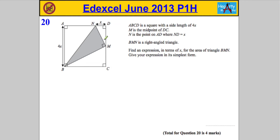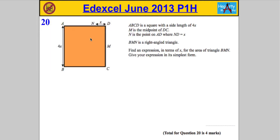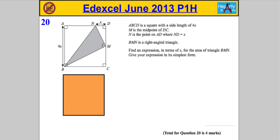What we need to find is an expression for the area of this shaded triangle. My approach is to work out the area of the whole square, then subtract the areas of the three surrounding triangles — the green triangle, this triangle here, and this one — to get the area of the shaded part.